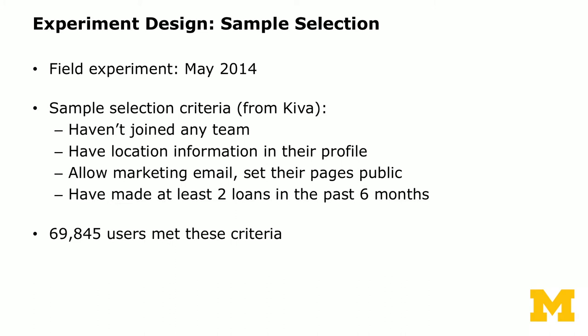Kiva imposed a set of selection criteria: people should not have joined any team, they should have location information in their profile for our computation, they allow marketing emails, they set their pages public, and they must have made at least two loans in the six months before the intervention. This means our sample is more active than the general population. We ended up with 69,845 users.